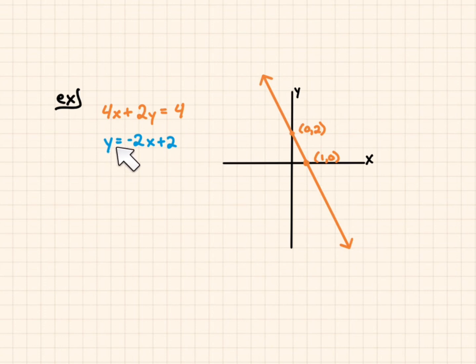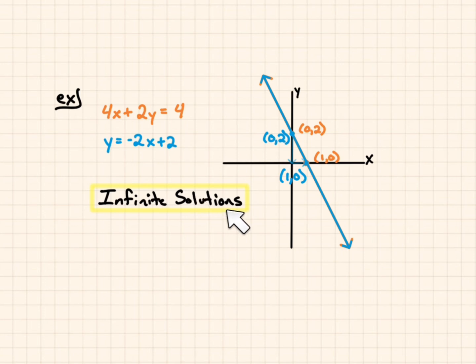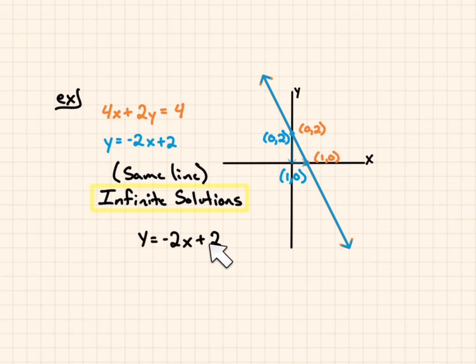The second equation is written in slope-intercept form: y equals negative 2x plus 2. We start at the y-intercept of positive 2, and the slope is negative 2, so every 1 positive in x, we go down 2 in y. Graphing this line, we can see that they overlap — meaning infinite solutions, as they create the same line.